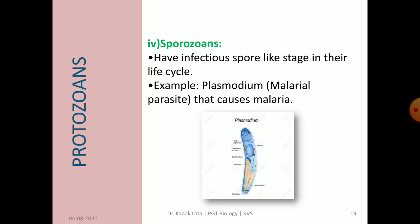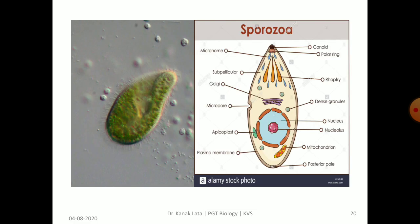The last group of protozoans is sporozoans. These have infectious spore-like stages in their life cycle. A common example is Plasmodium, called the malarial parasite, which causes malaria. Here you may observe Plasmodium and the internal structure of sporozoa.